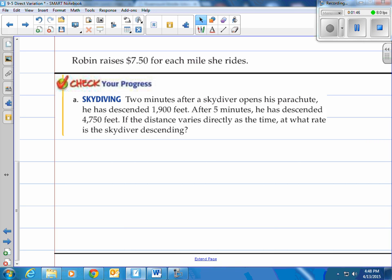Two minutes after a skydiver opens his parachute he has descended 1,900 feet. After 5 minutes he has descended 4,750 feet. If the distance varies directly as the time, at what rate is the skydiver descending? Well let's keep in mind what the rate is. Rate's going to be feet per minute.